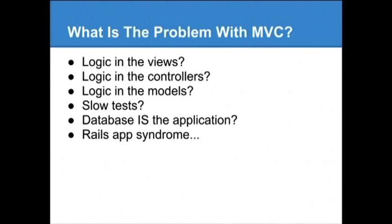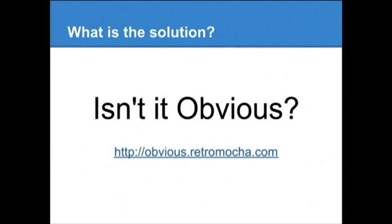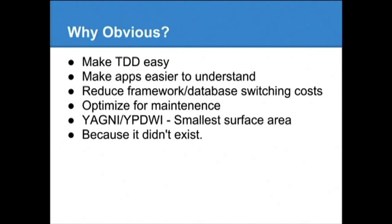Considering all of these problems that seem to face many developers, I came up with a concept I call the Obvious Architecture. You can get information about Obvious at obvious.retromoca.com. What Obvious does is it makes test-driven development easy, or easier. It makes apps easier to understand. It reduces the framework and database switching costs. With Obvious, your delivery mechanism like Rails, your web framework, and your database are pulled away from your application so your application can live as a gem. You can plug it together however you want — switching Rails for Sinatra or MySQL for Mongo should not be a big, complicated thing. It should actually be really easy.